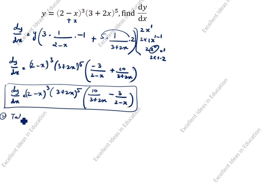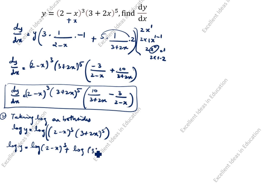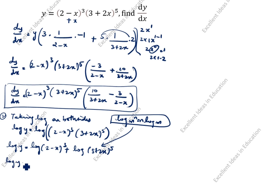Second method: taking log on both sides. log y = log[(2−x)³·(3+2x)⁵]. We split: log y = log(2−x)³ + log(3+2x)⁵. Using log(mⁿ) = n·log(m): log y = 3·log(2−x) + 5·log(3+2x).